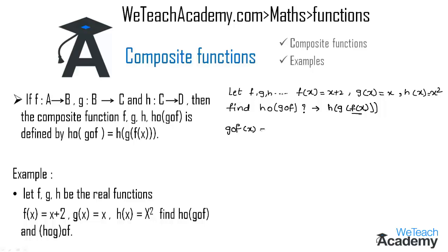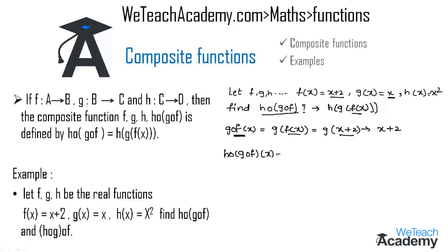To find h∘g∘f, first let us find g∘f(x) = g(f(x)). Since f(x) = x + 2, we write g(x + 2). Replacing x with x + 2 in g(x) = √x, we get g∘f(x) = √(x + 2). Now for h∘g∘f(x) = h(g∘f(x)) = h(√(x + 2)). Replacing x with √(x + 2) in h(x) = x², we get h∘g∘f(x) = (x + 2).